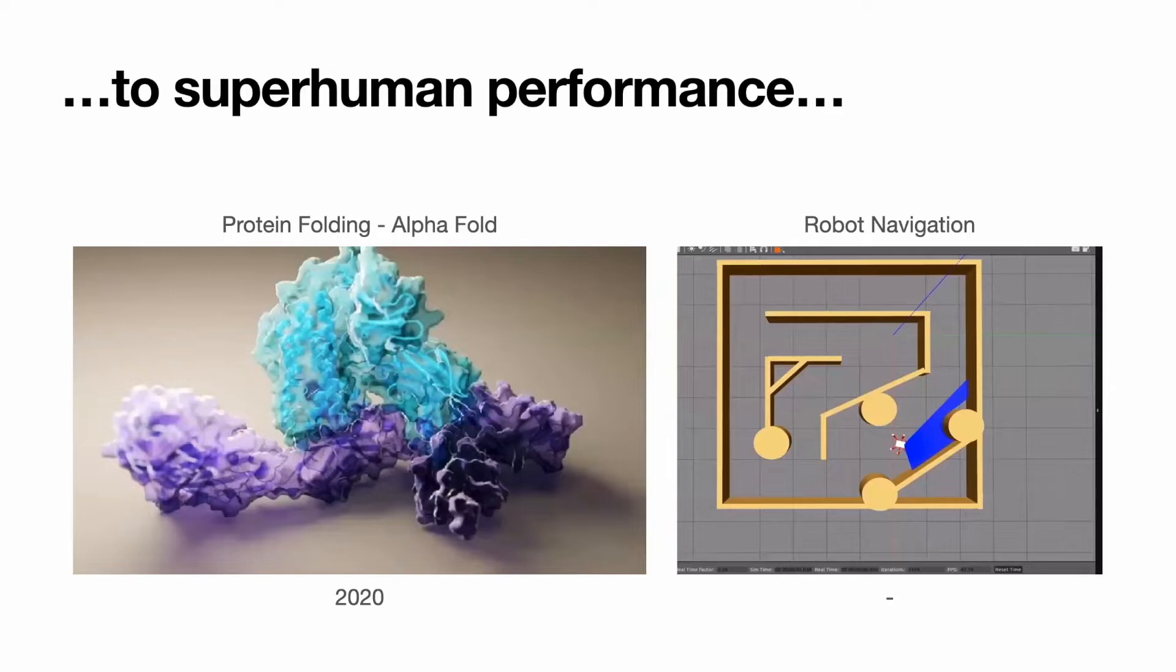Recently, so-called superhuman performance was achieved by folding proteins. This task initially was considered to be impossible to solve by numerical computations. It was solved by AlphaFold, and now we have a second AlphaFold.